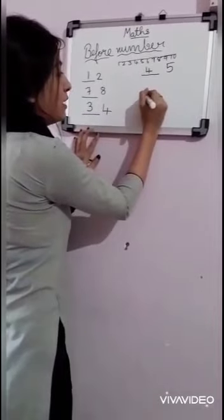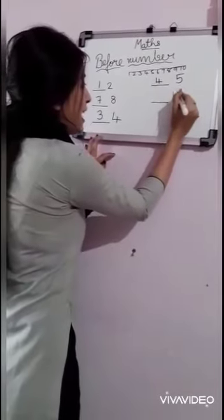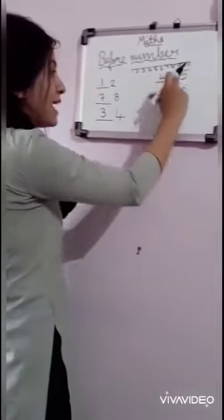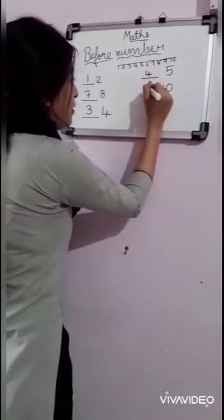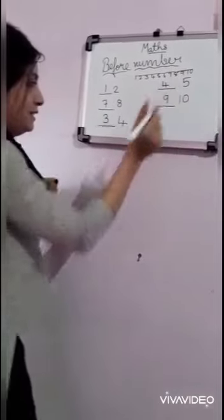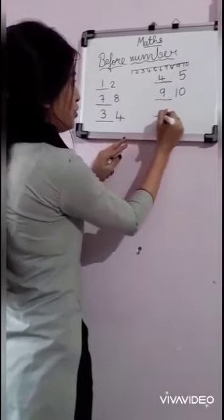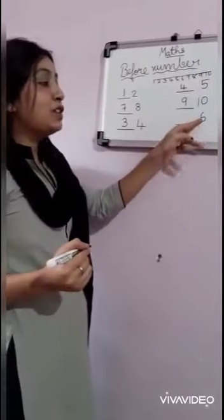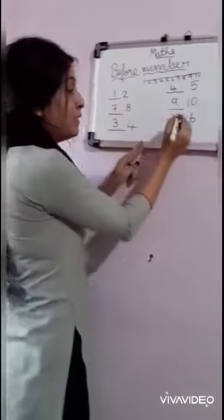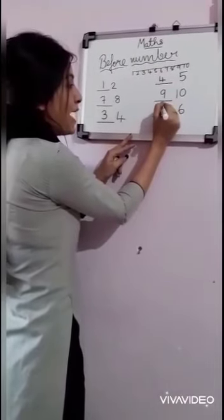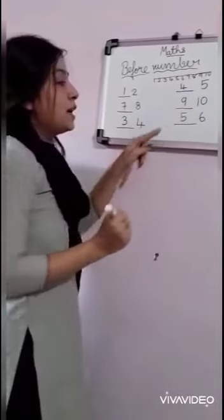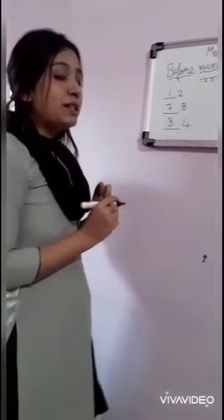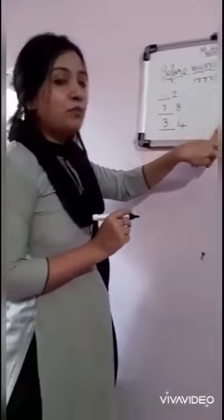So next, dash 6. Before 6, which number will come? Before 6, 5 will come. So 5 will be the before number for 6.